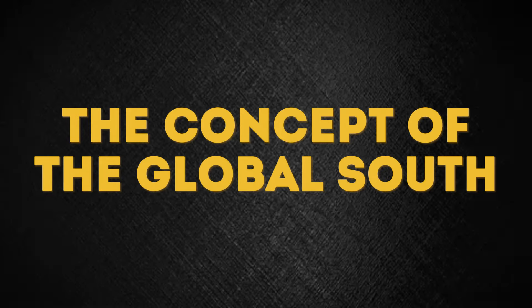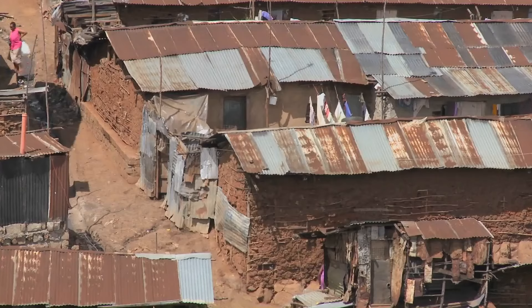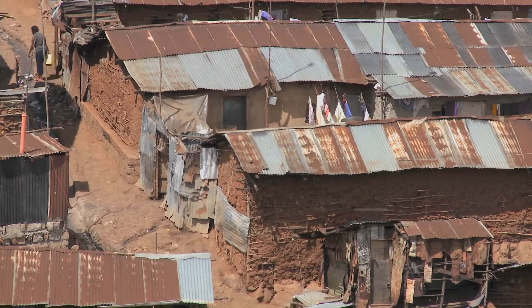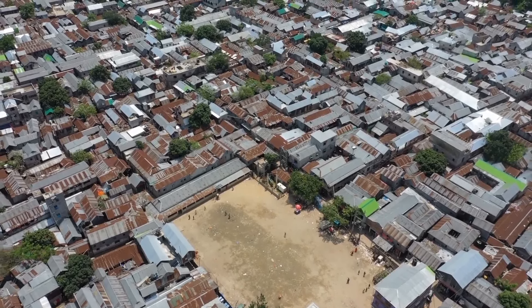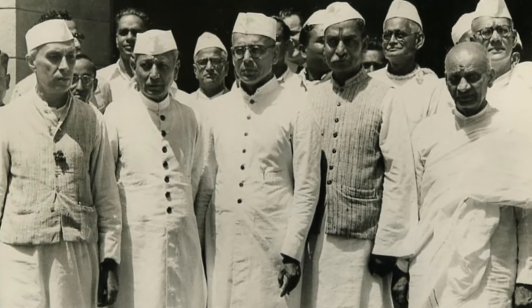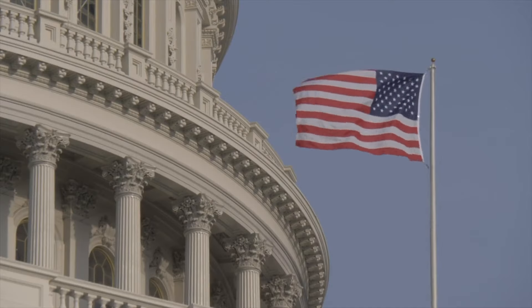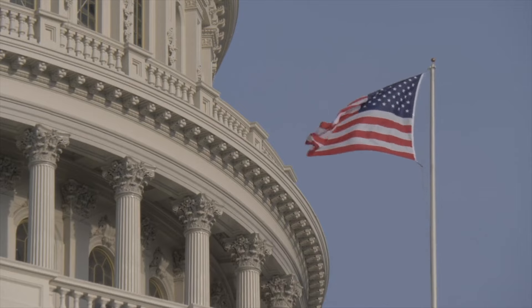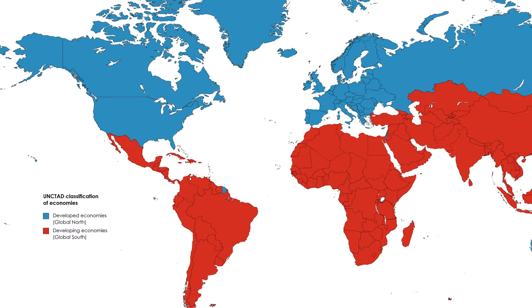The concept of the Global South began to be actively used in the 1980s as an alternative to the traditional terms 'Third World' or 'developing countries.' It emerged amid changes in the global economic and political system following World War II and during the Cold War. In the 1970s, there was increased interaction among countries that remained on the periphery of global processes — those that did not belong to the Western Bloc led by the US, the so-called Global North, and did not align with the Soviet Bloc.